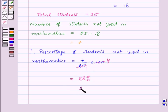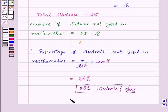Thus, 28% of students are not good in mathematics, and this is our required answer. With this, we finish this session. Hope you have understood the question. Goodbye and take care.